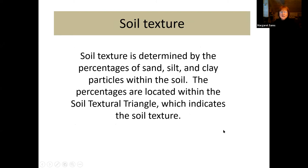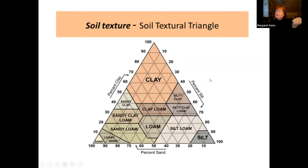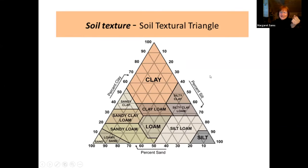Soil texture is determined by the percentages of sand, silt, and clay — that's what we see inside the textural triangle. I'm really happy if I can feel the soil with my fingers, add a little bit of water until I can work it. There are flow charts to determine texture by feeling it. I'm pretty good at getting it into the textural class — loam, silt loam, sandy loam. There are soil scientists who can get down to one or two percentage points of clay, sand, and silt. I'm not that good, but I don't need to be for archaeological work.